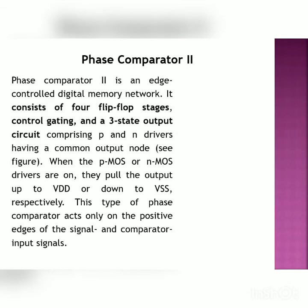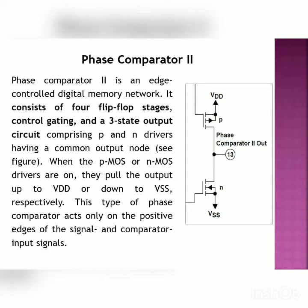Phase comparator 2 is an edge controlled digital memory network consisting of 4 flip-flop stages, a control gating circuit, and a tri-state output circuit with P and N drivers having a common node output. The tri-state network consists of a PMOS and NMOS with a common output node. When the PMOS driver is ON it pulls the output up to VDD; when NMOS is ON it pulls down to VSS. This phase comparator acts only on the positive edge of the signal and comparator inputs, so the duty cycle is not critical.